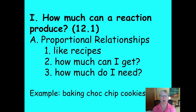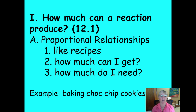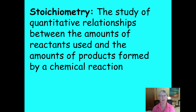If you have an equation, it's kind of like a recipe. It shows the proportional relationships between the products and reactants, and it can tell you how much product you can make and how much reactant you'll need — just like knowing ingredients for chocolate chip cookies and how to double the recipe. Stoichiometry is simply the study of quantitative relationships between the amounts of reactants used and the amount of product produced by a chemical reaction.